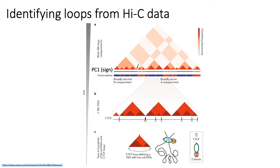Below the heatmap are two rows: the top one shows PC1, which tells you which regions are in the A versus B compartment, colored based on whether the sign of PC1 was positive or negative. You can see that the boundaries between the blue and red segments correspond to TAD boundaries. The second row shows a hypothetical plot of expression at each locus, and you can see that certain TADs tend to be mostly blue or mostly red, corresponding to whether that TAD belongs to the A or B compartment.